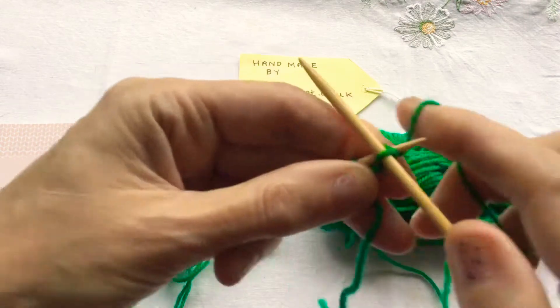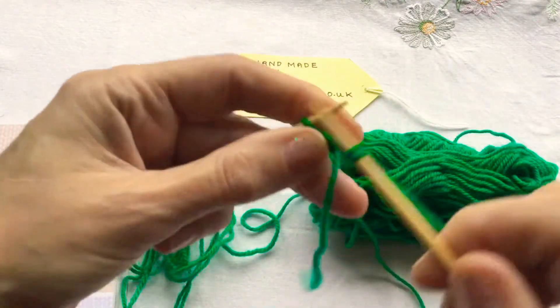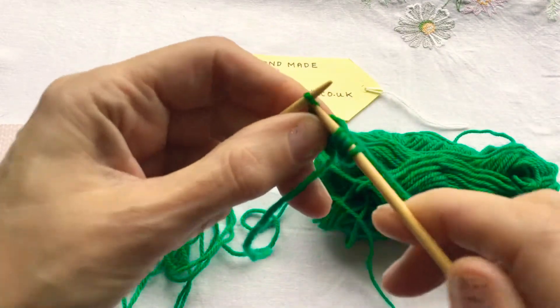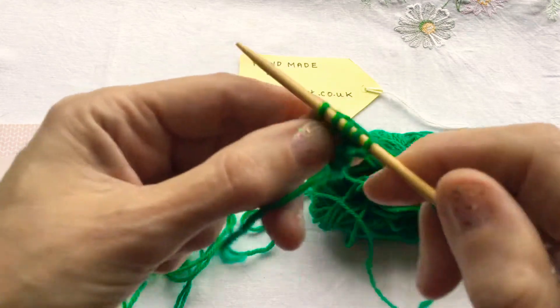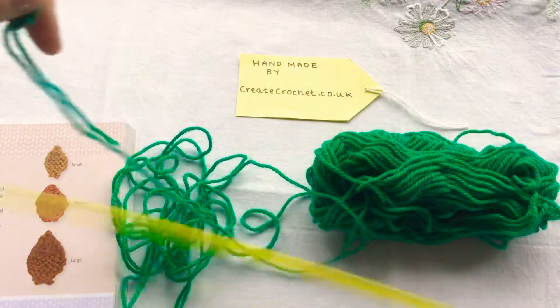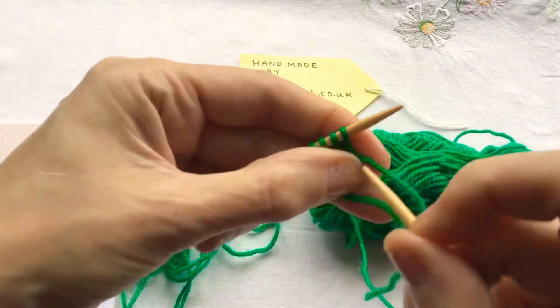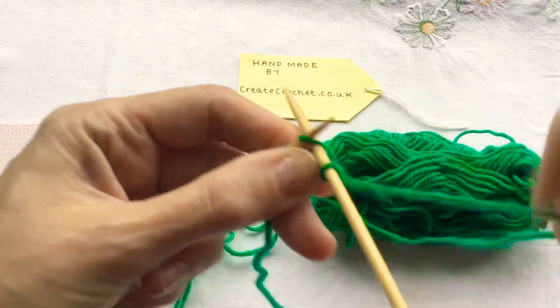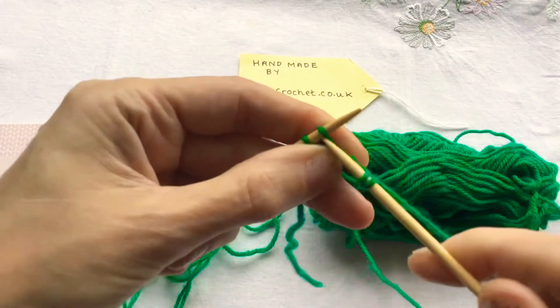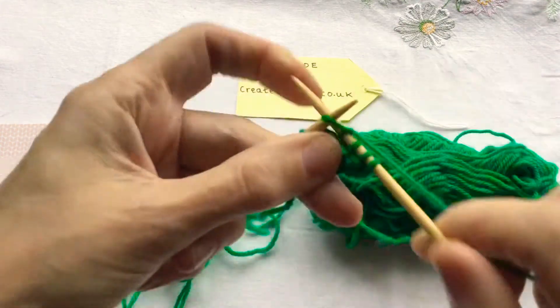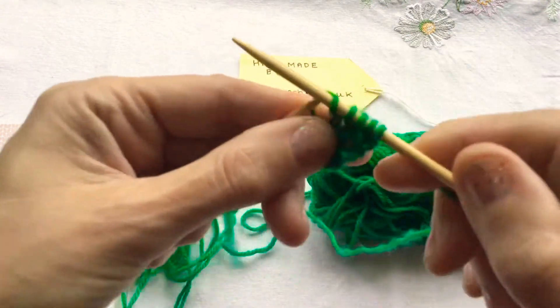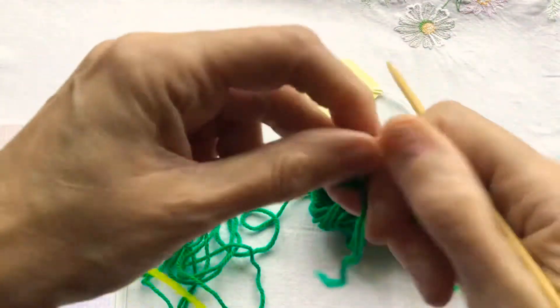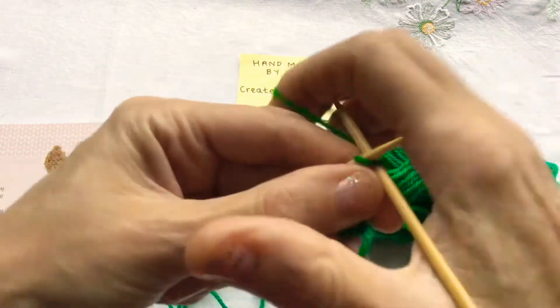Turn, then knit the fourth row. Turn, knit the fifth row and turn. Knit the sixth row.